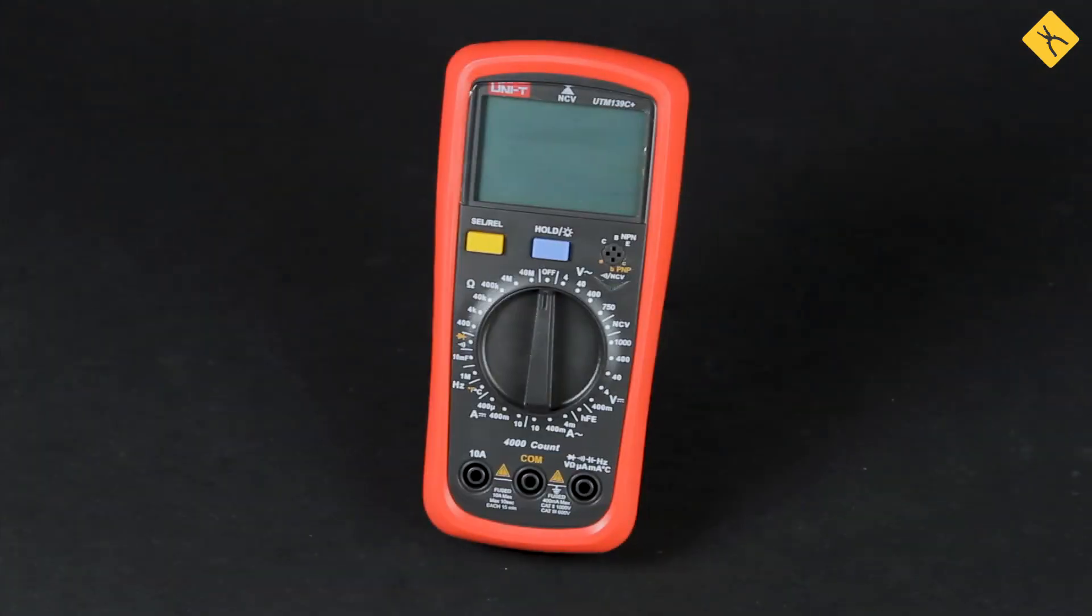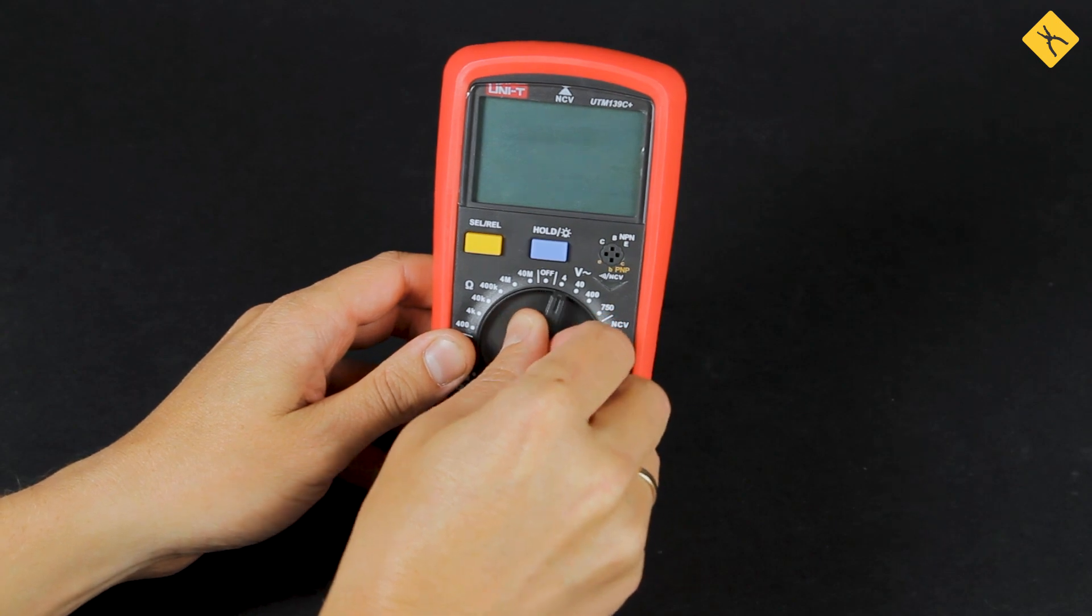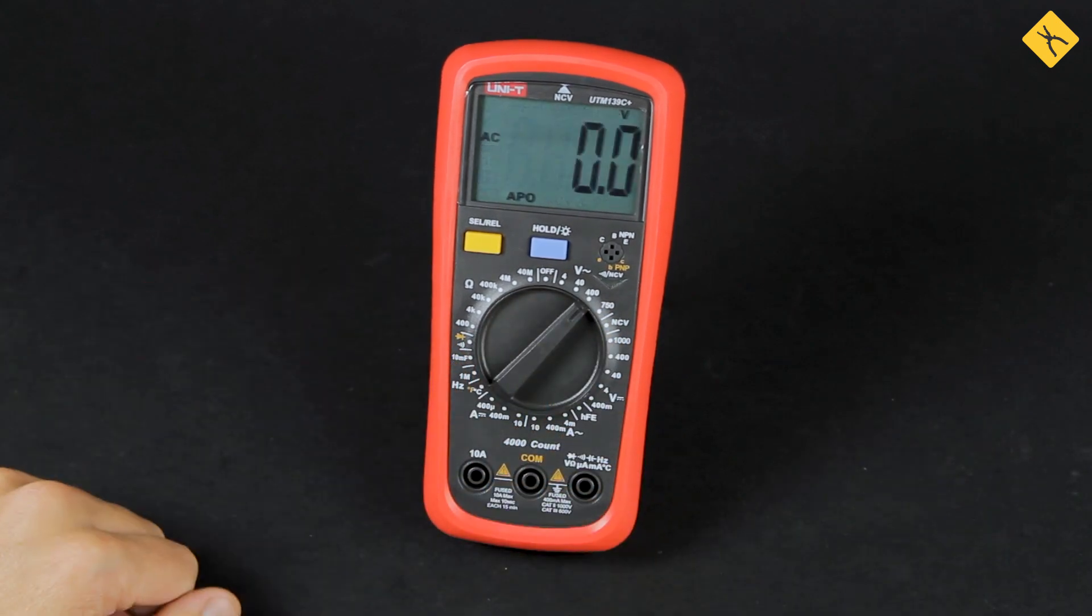You should pay close attention to measurement ranges. For example, a multimeter that allows voltage measurements up to 400V will be good enough to use for household applications.